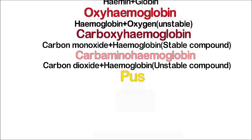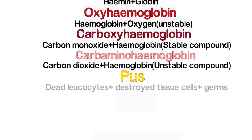Pus is a thick fluid that constitutes killed leukocytes (WBCs), along with destroyed tissue cells and germs. The germs may be bacteria or may be fungus.